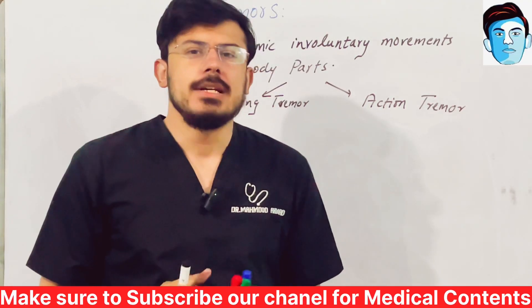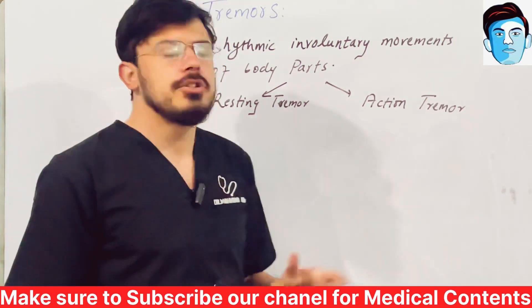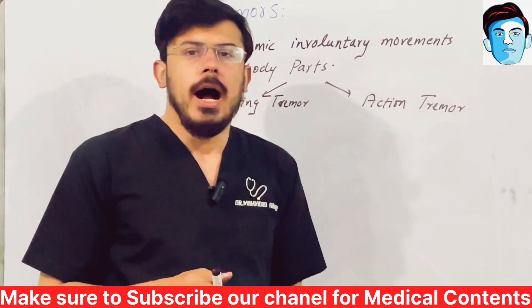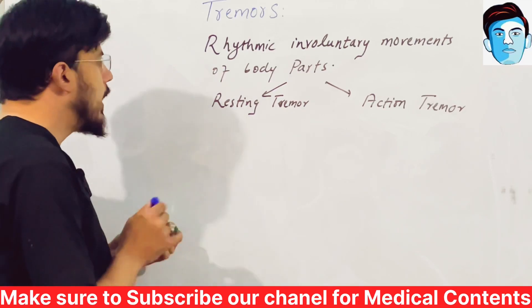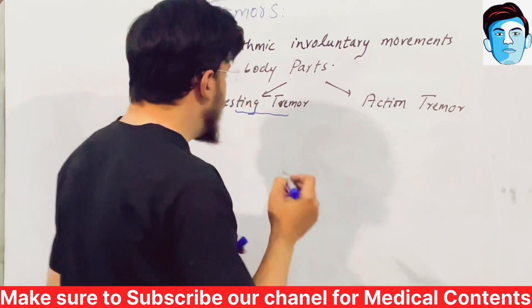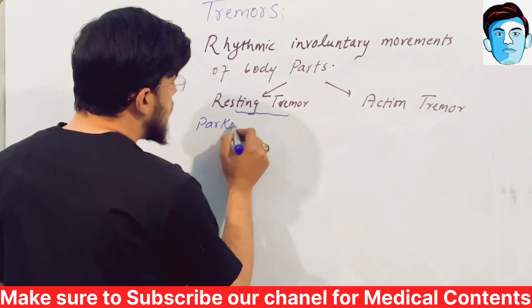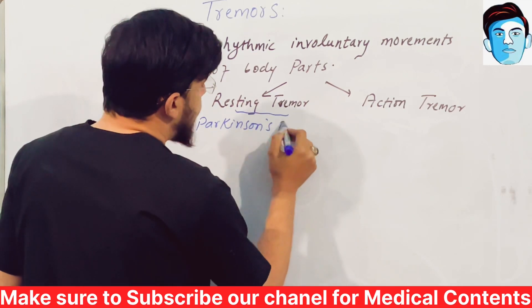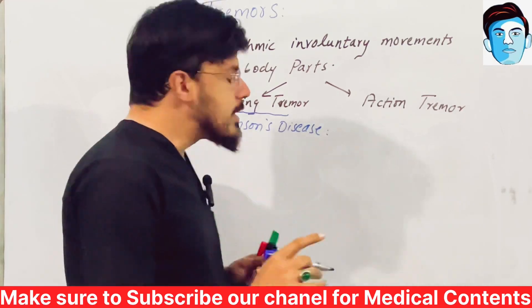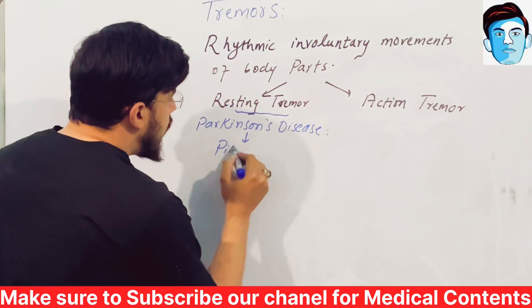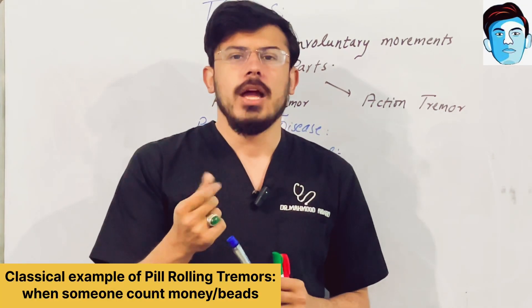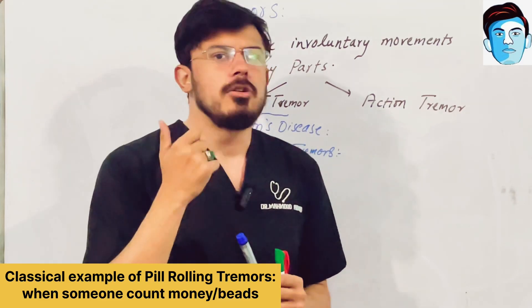Resting tremors occur at rest, while action tremors occur when the patient starts voluntary movement of the body. Under resting tremors, it is mainly seen in Parkinson's disease. In Parkinson's disease, the patient is usually manifested with rigidity, akinesia, and tremors. In Parkinson's disease, there is pill rolling tremors — like when we count money or count beads. This is basically pill rolling tremors.